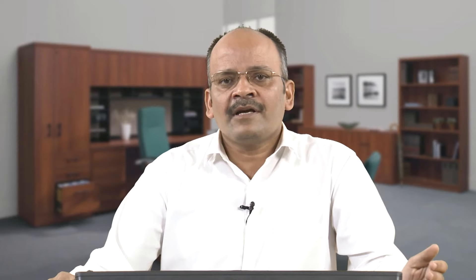Continuing with the chemistry of coagulation — the coagulation chemistry is highly complex. Whenever we are using any metal coagulants and they are added to water, they hydrolyze to form various acidic products, and that affects the pH, which in turn affects the solubility of the coagulant. Suppose any metal coagulant is added — as soon as it is added the pH of the water changes. We may have optimized our condition with respect to one particular pH.